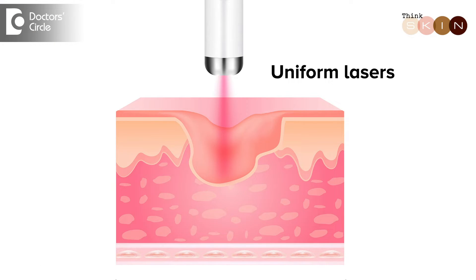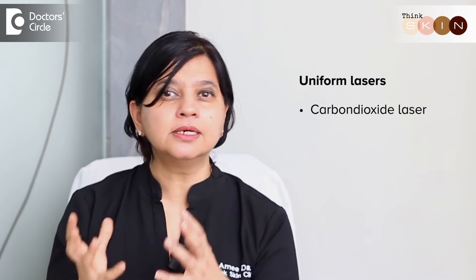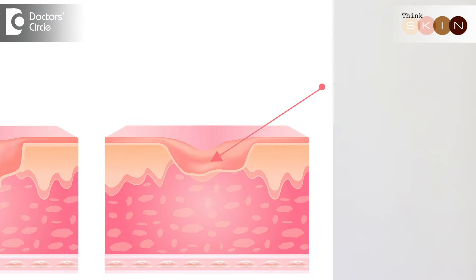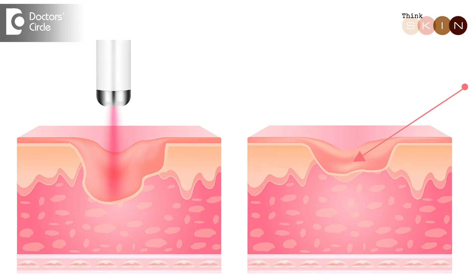Laser is generally done in two forms: either uniformly or fractionated. Uniform lasers are generally carbon dioxide or erbium glass lasers, which remove the superficial thin layer of your skin using heat or laser light. This removes the entire superficial layer uniformly, and it takes about 10 days to almost two weeks to heal, but the scar is completely layered out.